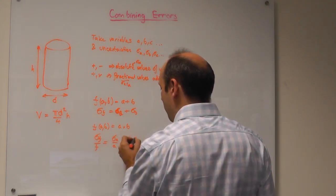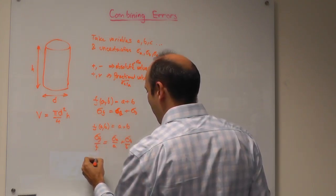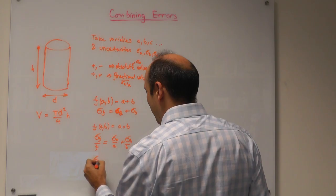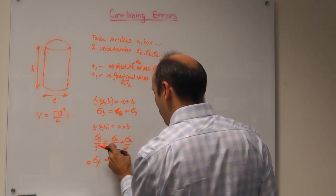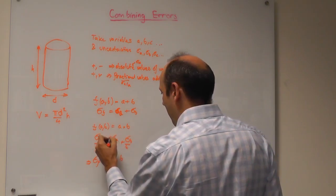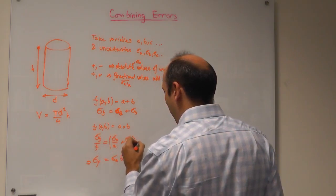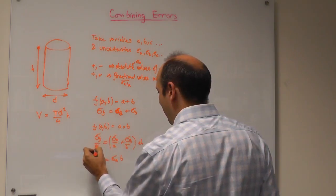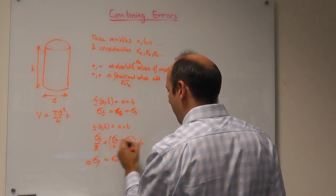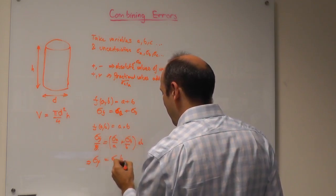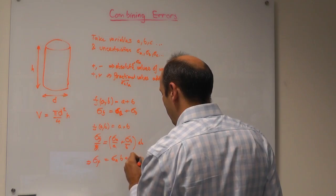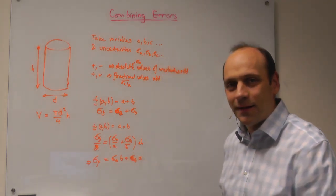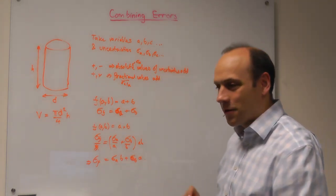When I multiply up by f, which is a times b, I get the uncertainty in f equals sigma a times b plus sigma b times a. The a's there cancel out and I get sigma a times b plus sigma b times a — which is not so obvious, but interesting.